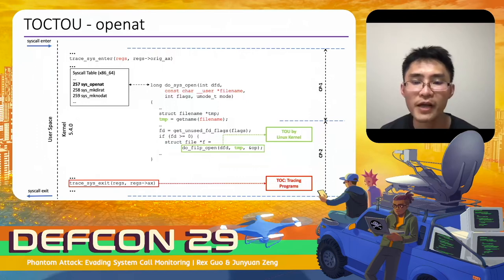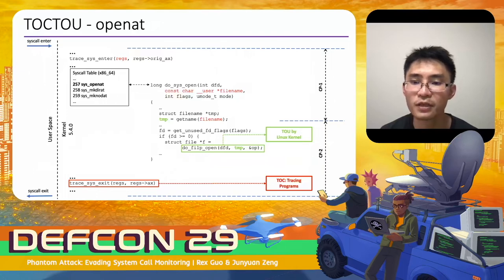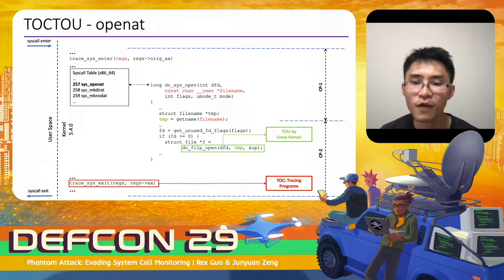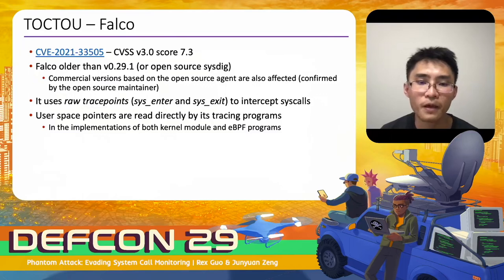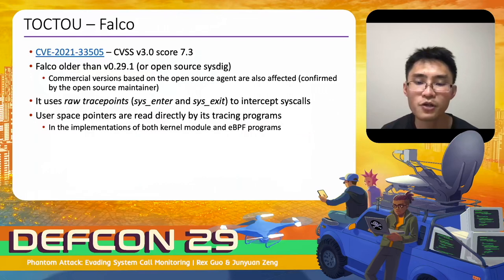Falco is vulnerable to TOCTTOU, tracked by CVE-2021-33505 with a CVSS score of 7.3. The vulnerability exists in Falco versions older than 0.29.0, or open-source Sysdig. It also affects some commercial versions based on the open-source agent, as confirmed by the open-source maintainer. The reason Falco is vulnerable is that it uses sys_enter and sys_exit tracepoints to intercept system calls, meaning user-space pointers are read directly by Falco's tracing program in both kernel module and eBPF implementations.